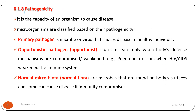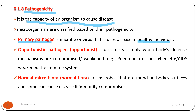Pathogenicity is the capacity of an organism to cause disease. Microorganisms can be classified based on their pathogenicity into different groups. The first group is primary pathogens — microbes or viruses that cause disease in healthy individuals.